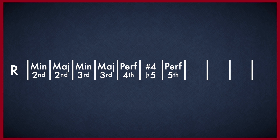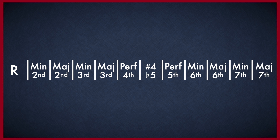The remaining intervals go back to the more simple major and minor system. Upwards from the fifth we have the minor sixth, then the major sixth, then the minor seventh, then the major seventh. The major seventh is the largest interval you can have before reaching the octave again, and that gives us all 12 notes of the musical system.